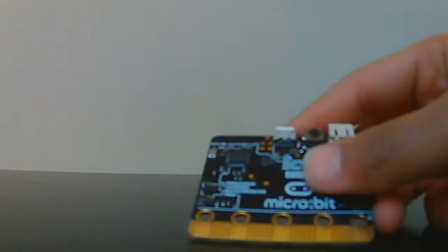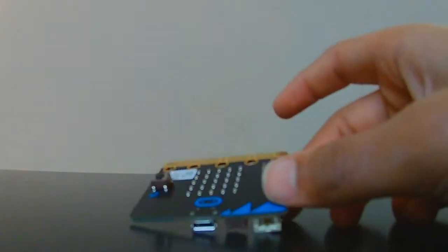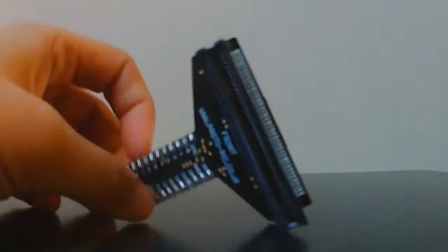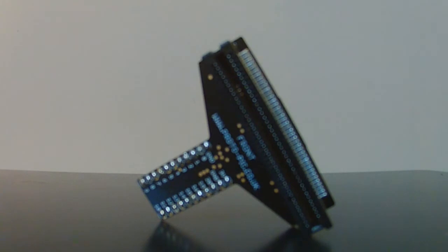So first, you're going to need your micro bit, then you're going to need this piece right here. I don't know what it's called, but you have to insert your micro bit into it, and you'll be able to use the various pins, pin inputs and outputs on it.